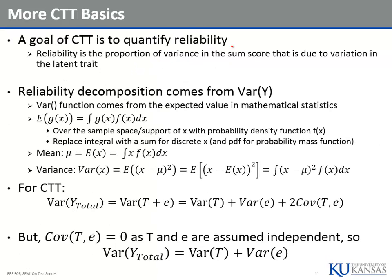A goal of classical test theory is to quantify reliability. I've conspicuously not talked about reliability yet in this course — I'm going to do it today. I'm going to give you one formula using CFA model parameters that covers all the reliability you'll ever need if you're doing CFA. That includes coefficient alpha and Spearman-Brown. It's all in one formula.